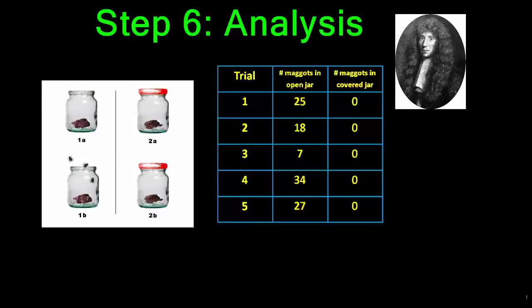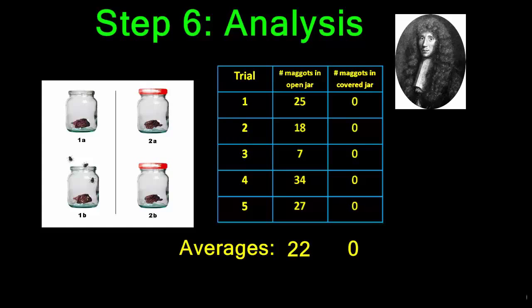Redi might have conducted averages for each group. The average number of maggots in the open jar in this case was 22, whereas the average number of maggots in the covered jar was zero.